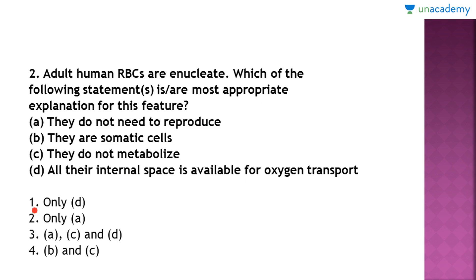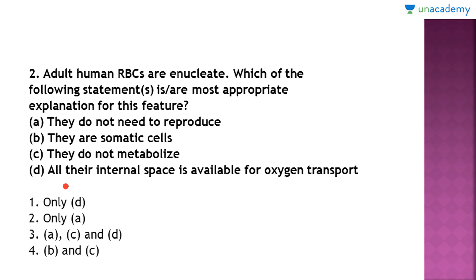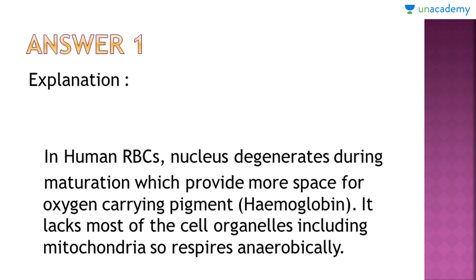Let's see which is most important. Option one gives only D — all the internal space is available for oxygen transport — which is true. Option two says they do not need to reproduce. Option three gives A, C, and D: they do not reproduce, they do not metabolize, and all internal space is available. Option four gives B and C — they are somatic cells and do not metabolize. The correct answer is option one — only D — which is the most correct statement. The others are either partially correct or totally false.